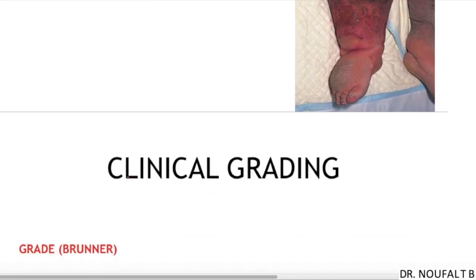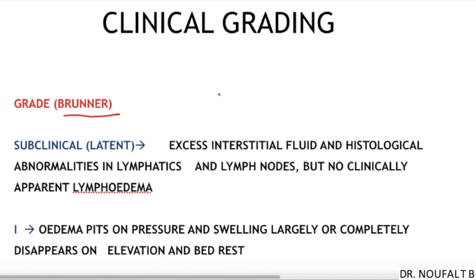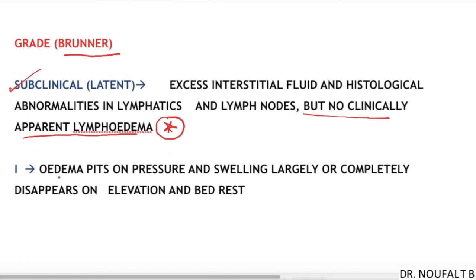Coming to clinical grading of lymphedema according to Brunner, lymphedema is divided into four grades. The first is the subclinical or latent grade, where there is excess interstitial fluid accumulation and histological abnormalities in the lymphatics and lymph nodes, but no clinically apparent lymphedema.